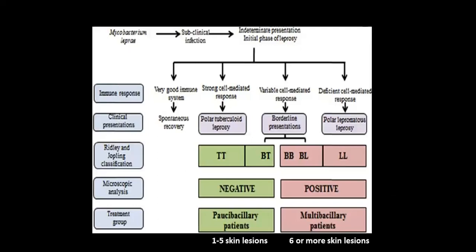This algorithm shows mycobacterium leprae infection — subclinical, initially indeterminate. With very good immune response: spontaneous recovery, the patient doesn't even know they had leprosy. Strong cell-mediated response: polar tuberculoid. Deficient cell-mediated response: polar lepromatous. Variable cell-mediated response: borderline — further divided into borderline tuberculoid, borderline, borderline lepromatous, and lepromatous according to Ridley-Jopling.